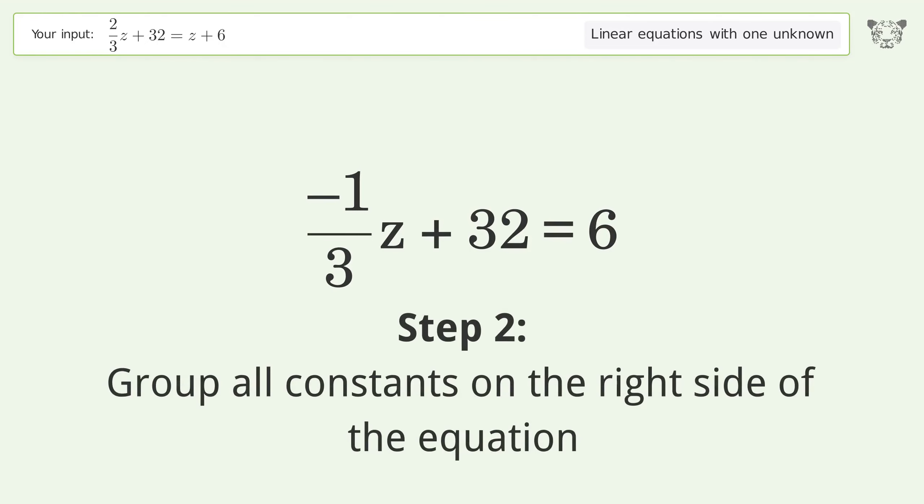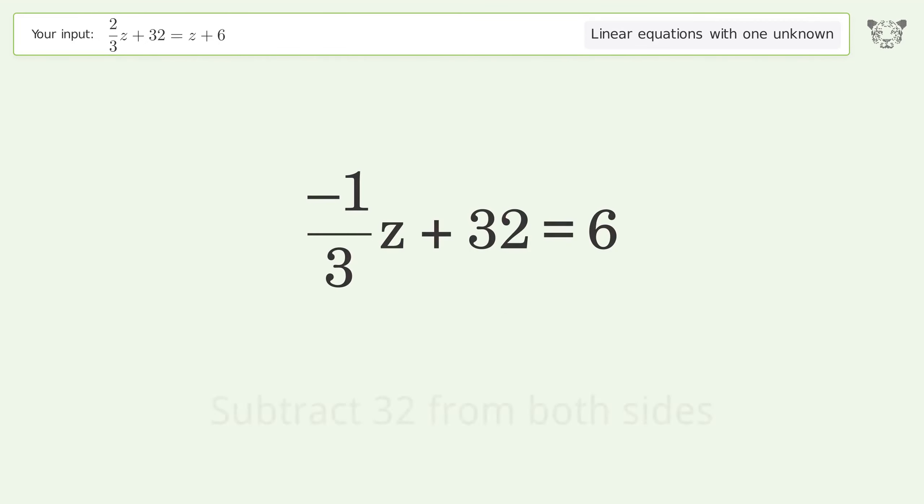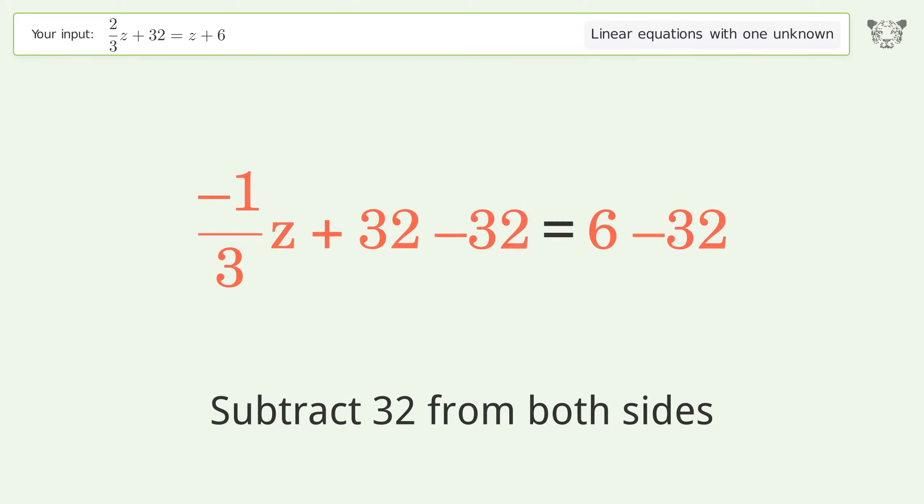Group all constants on the right side of the equation. Subtract 32 from both sides. Simplify the arithmetic.